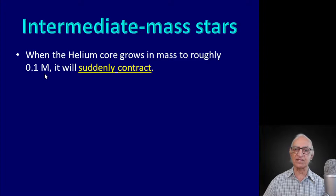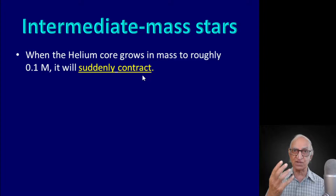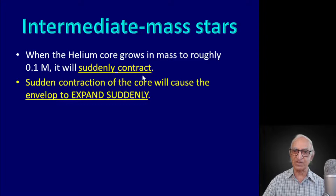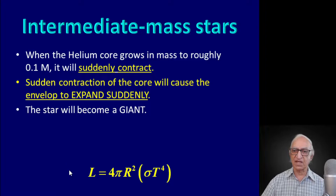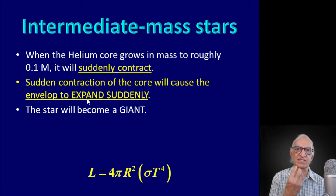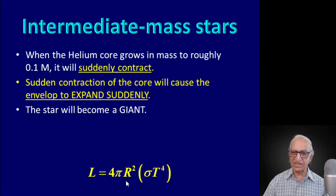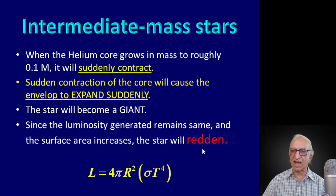When the helium core grows in mass to roughly 0.1 times the mass of the star, it will suddenly contract because Chandrasekhar and Schoenberg had shown that this is what will happen as long as the core remains isothermal — meaning at the same temperature everywhere. The sudden contraction of the core will cause the envelope to expand very suddenly. The star will become a giant. Since the luminosity of the star is its surface area 4πr² multiplied by σT⁴, when the core is doing these dramatic things, the luminosity does not change and its energy generation rate is not changing. Since the radius expands, the temperature will drop and the star will become reddened and become a red giant.